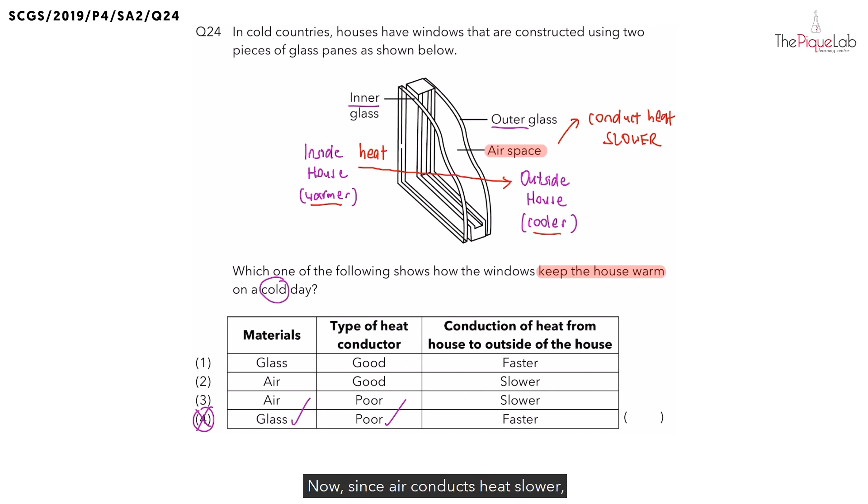Since air conducts heat slower, what does this tell us about the property of air? Is air a good or a poor conductor of heat? Yes, from this, we can tell that air is a poor conductor of heat.